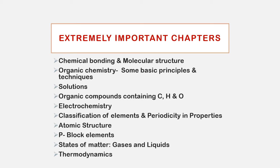For Electrochemistry: EMF calculation, the Nernst Equation, and electrode cell reactions are important. For Atomic Structure: Heisenberg's Uncertainty Principle has many problems. Planck's Quantum Theory and Quantum Numbers are very important — every time, one question is 100% expected.